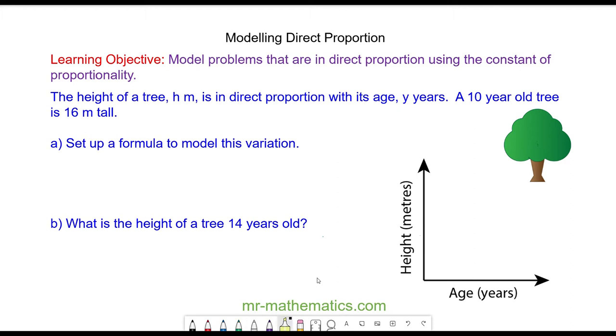In this example, the height of a tree h meters is in direct proportion with its age y years. As a tree is planted at age zero the height will be zero, and as the age increases that height will increase, so we will have a linear relationship between the height and the age. We can model this relationship algebraically using a symbol which means in direct proportion, and we can write this as h is in direct proportion to y.